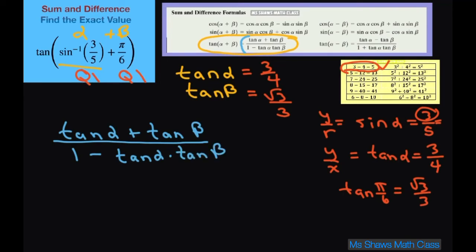So writing this out, we're going to get this equals three-fourths plus square root of 3 divided by 3, divided by 1 minus three-fourths times square root of 3 divided by 3.